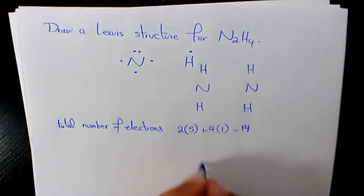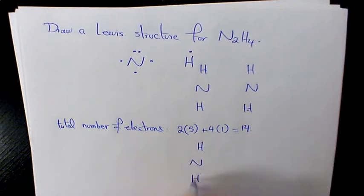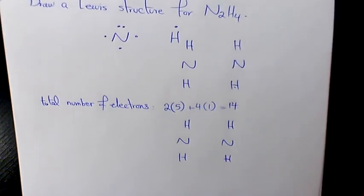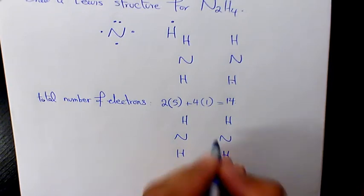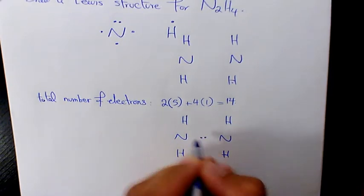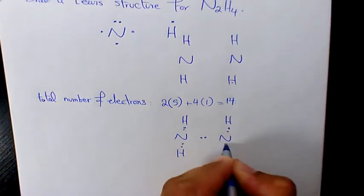We need to place a pair of electrons between each adjacent pair of atoms. Every two of these dots represents a bonding electron pair that forms a single covalent bond. So we place bonding pairs between each adjacent atom pair — that accounts for 5 bonds, using 10 electrons.